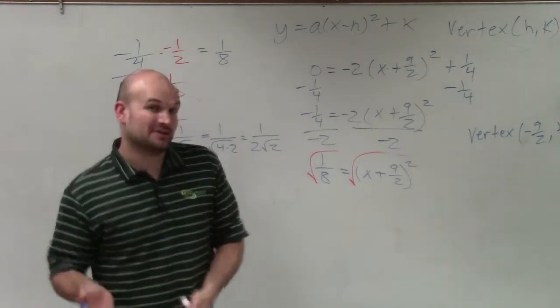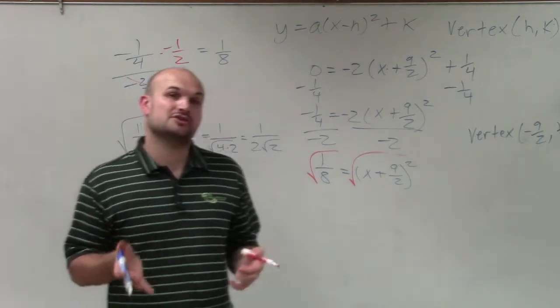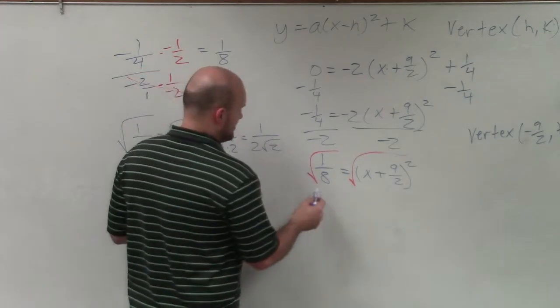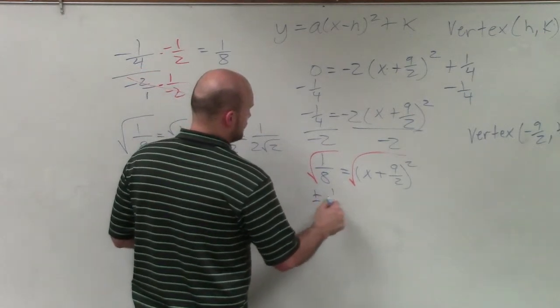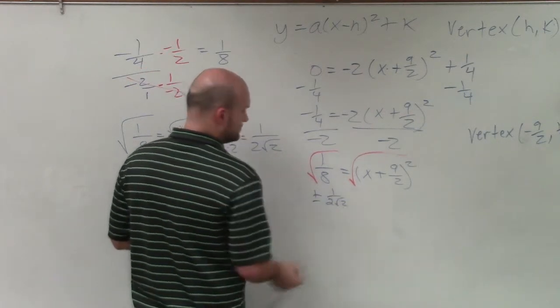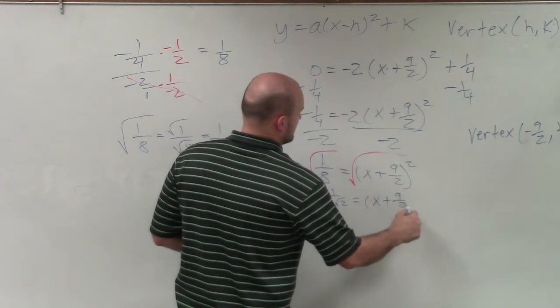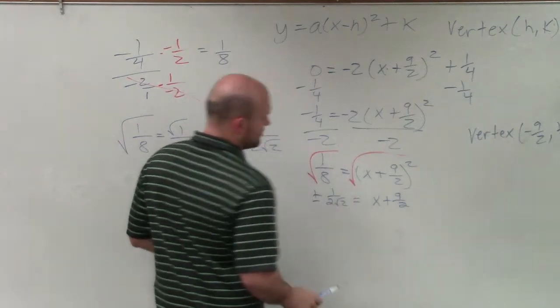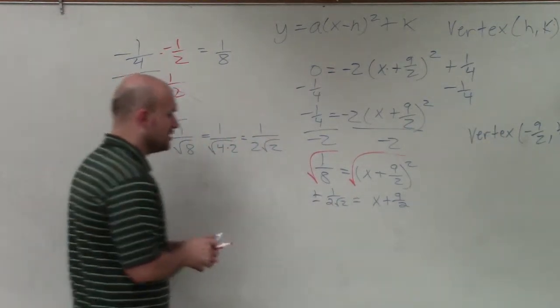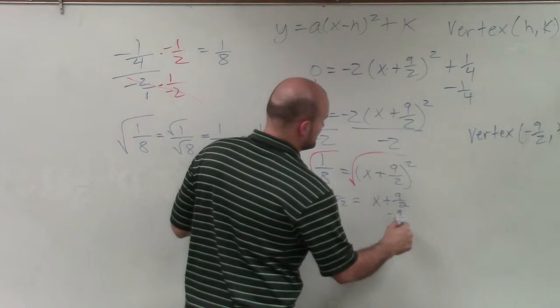OK. The other thing to remember is when you introduce the square root, you have to make sure you include the positive and the negative value of that. So therefore, I really have plus or minus 1 over 2 square root of 2 is equal to x plus 9 halves. I don't need these parentheses anymore, because I undid the square root. Now I just need to solve for x. So I'll subtract the 9 halves on both sides.